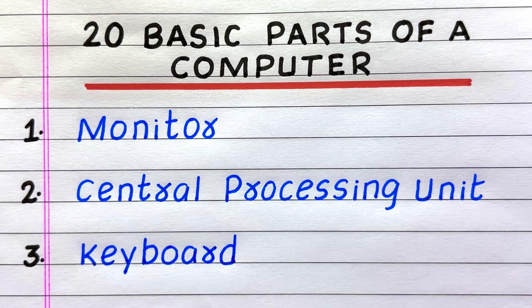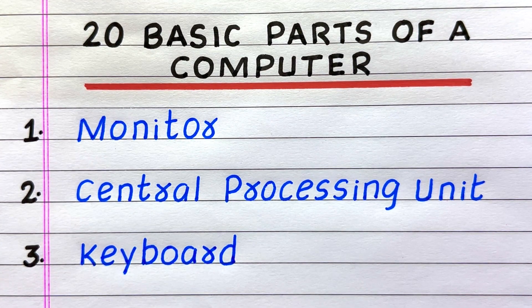The name of the first basic part of a computer is Monitor. Second, Central Processing Unit, CPU. Third, Keyboard.